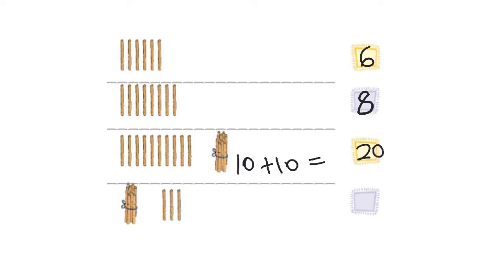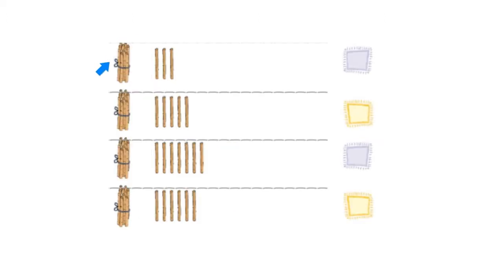In the next picture, I see a bundle of ten sticks and three sticks. So how much do I have? Ten plus three — together I have thirteen sticks. In this picture, I see one bundle of ten sticks, so ten plus one, two, and three — three more sticks. So ten plus three gives me the number thirteen.